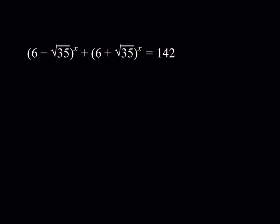We have 6 minus root 35 to the power x, plus 6 plus root 35 to the power x, equal to 142. This might look like a radical equation, but it's actually an exponential because x is the variable and it's in the exponent.